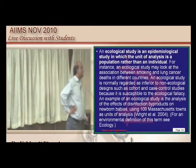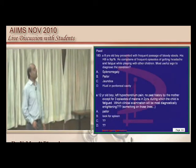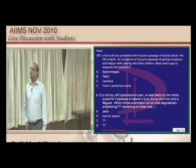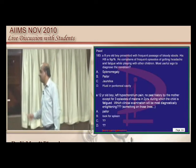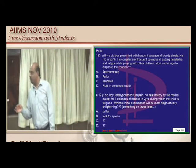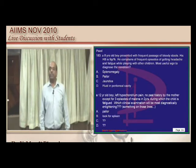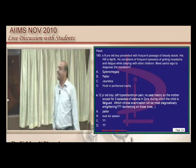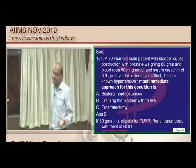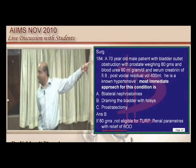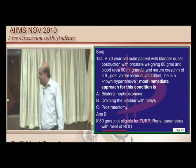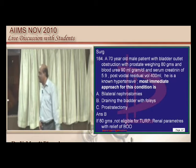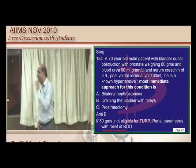A 70-year-old with bladder outlet obstruction, very high serum creatinine, and high post-void residual urine: the first step is to relieve the bladder by Foley catheterization, which is the simplest maneuver. Although creatinine and urea are high, TURP or a prostate procedure can come later — bladder must be relieved first.